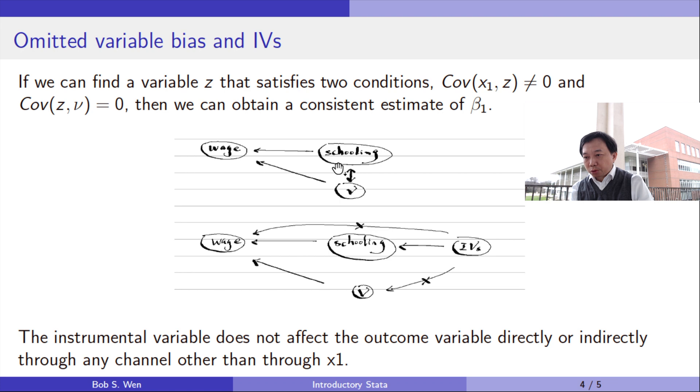The method of instrumental variables can be used to solve the problem of endogeneity of one or more explanatory variables. If we can find a variable z that satisfies two conditions: the relevance condition, which means the covariance between x1 and z is not equal to zero, and the exclusion restriction, which means the covariance between z and nu is equal to zero.